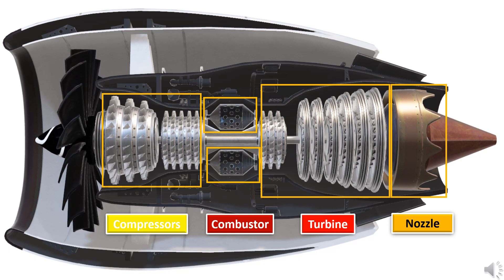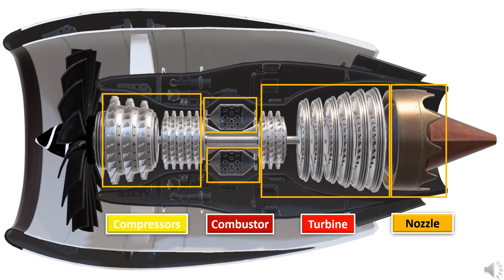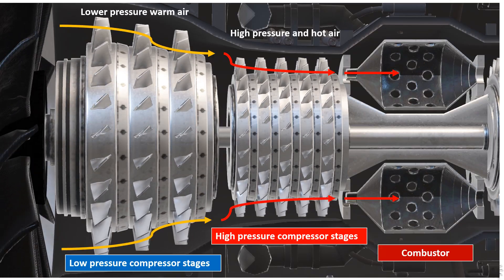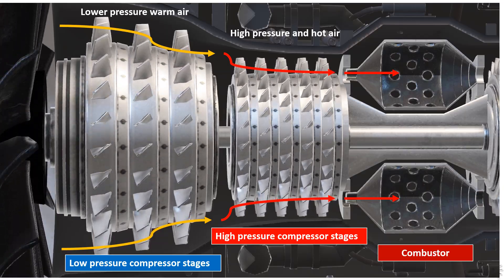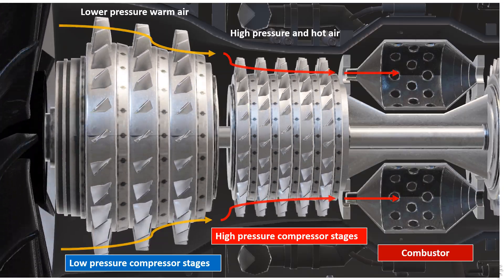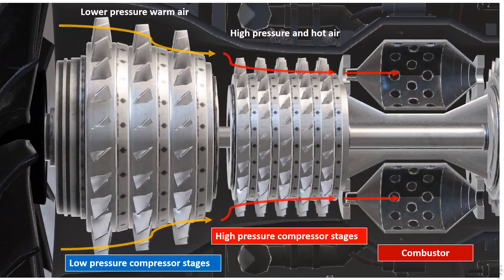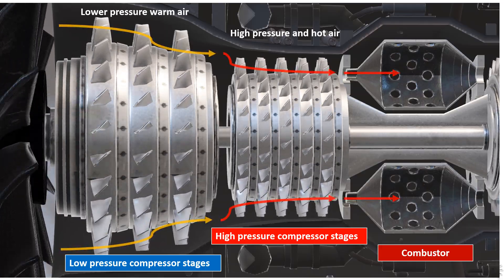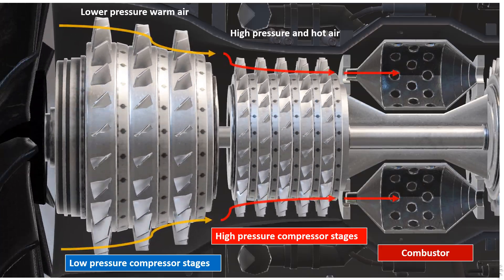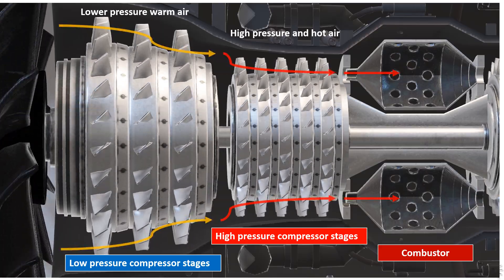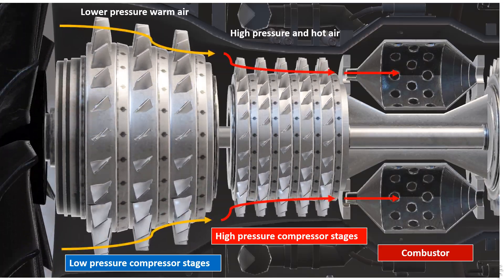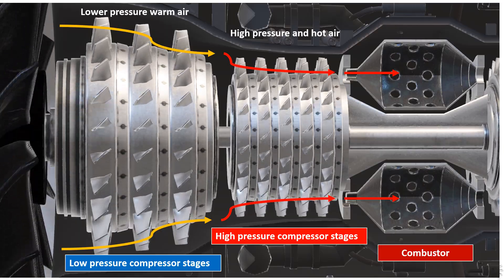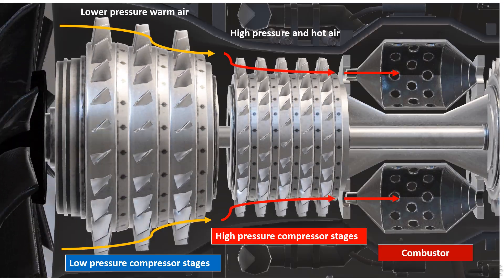The air is sucked inside the engine from the atmosphere due to the low pressure created by the compressors in front of the engine. The air gets compressed — its pressure is increased by the compressor. The compressors are usually made into different stages: low pressure compressor stages and high pressure compressor stages.